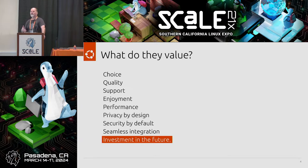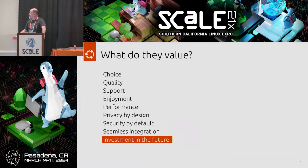Our users tend to value certain things — things like privacy, performance, and security. People are more aware of these sorts of things. Choice, of course — these are some of the things we feel our users really value.